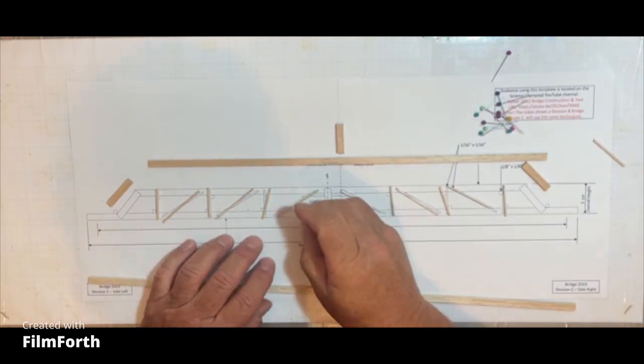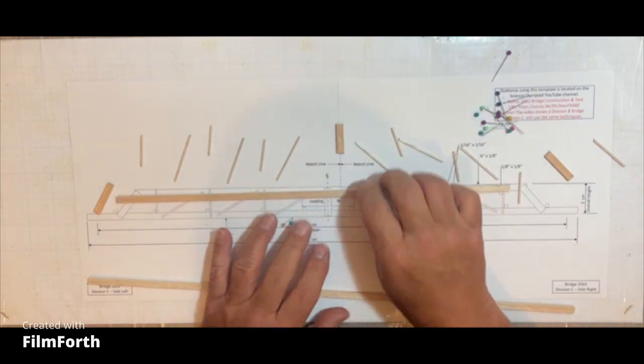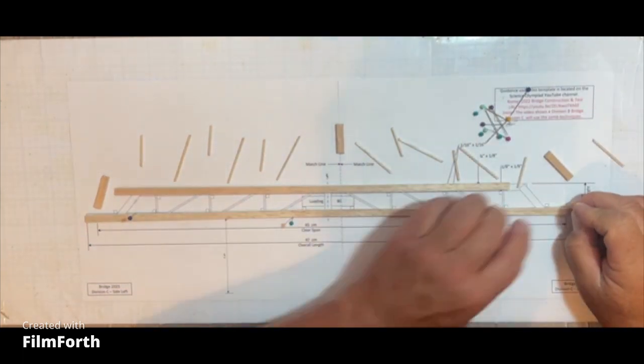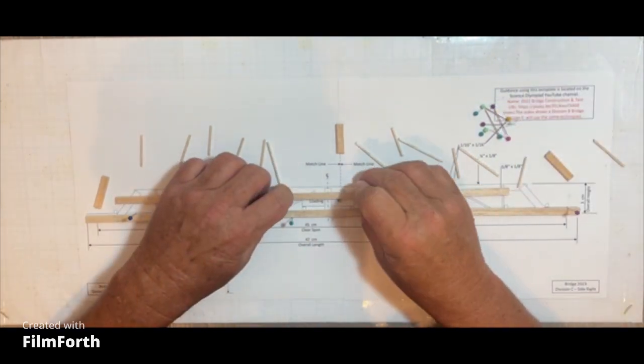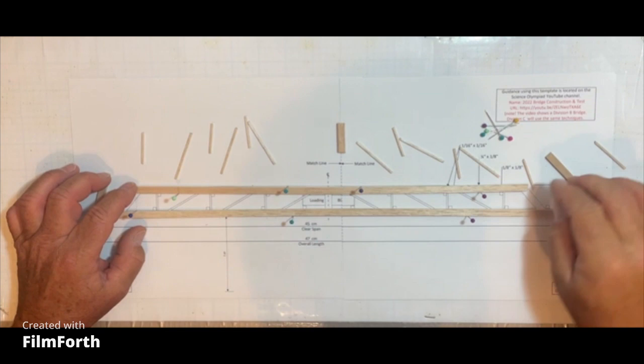So we can start by pinning the horizontal member and the top member keeping those nice and straight, and once we get those pinned we can go ahead and glue some of the other members here, the vertical center and the two side members as well.